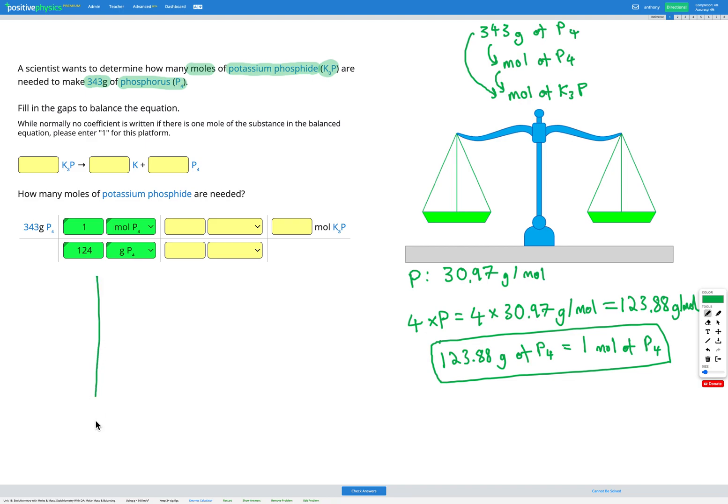So I'm going to write out my little table where I've got my element, I've got my reactants and I've got my products. And our elements in this equation are K and P. So right now, we've got three Ks in our reactants because we've got K3P and one P in our reactants. In our products, we've got one K and we've got four Ps.